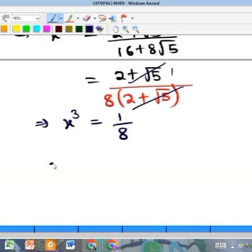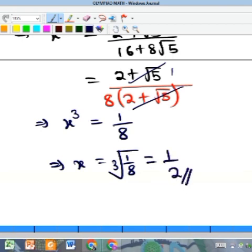If I now take the cube root of both sides, this means that x alone is the cube root of 1 over 8, and that is equal to 1 over 2. That's the solution to this problem.